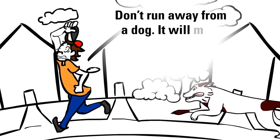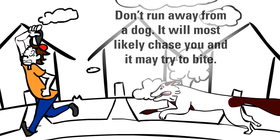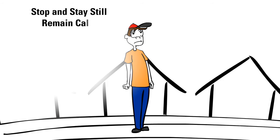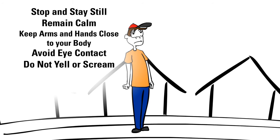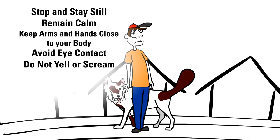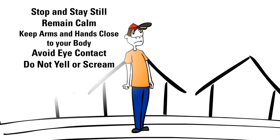Don't run away from a dog. It will most likely chase you and may try to bite. Instead, stop, stay still, remain calm, and keep your arms and hands close to your body. Try to avoid direct eye contact with the dog and be quiet. Do not yell or scream. Let the dog sniff you and check you out. When the dog determines you are not a threat, it will probably just go away.